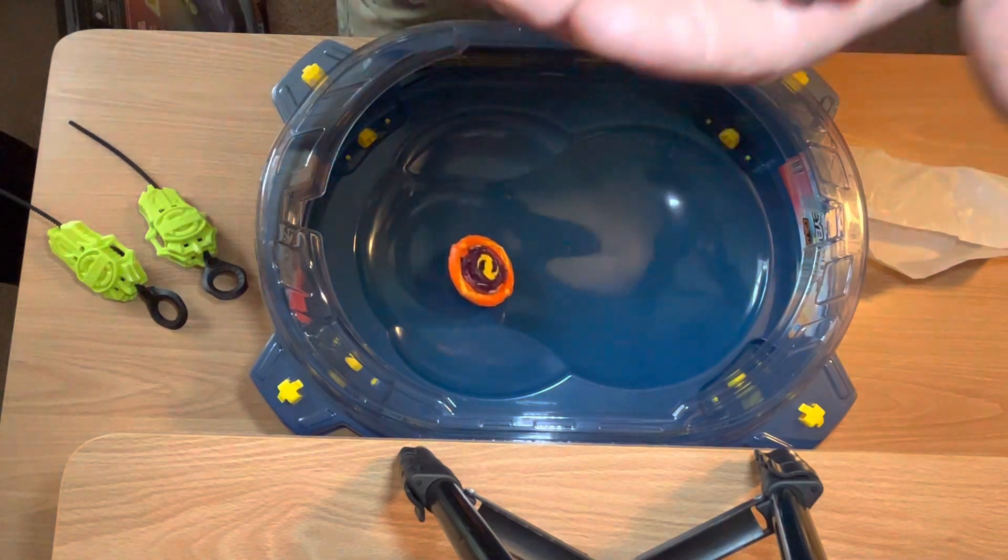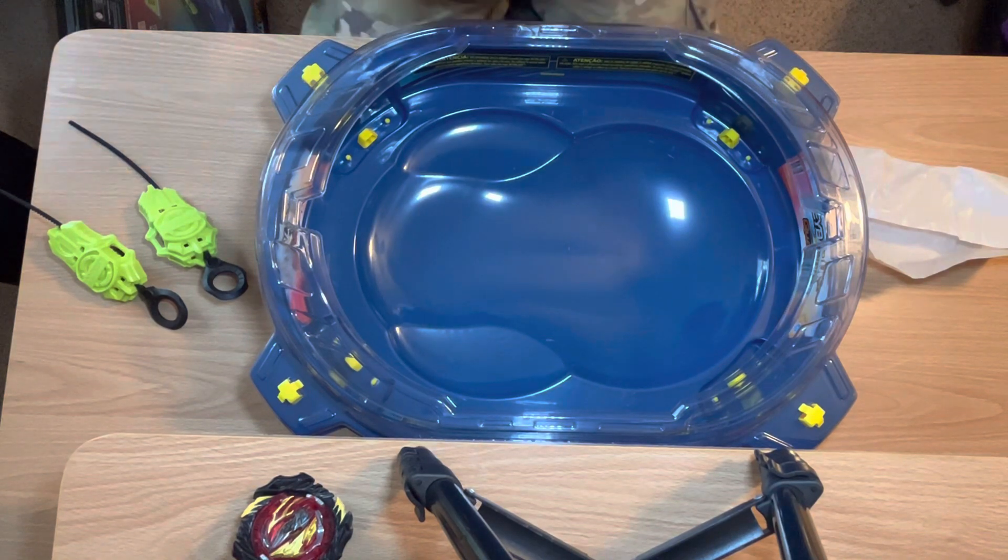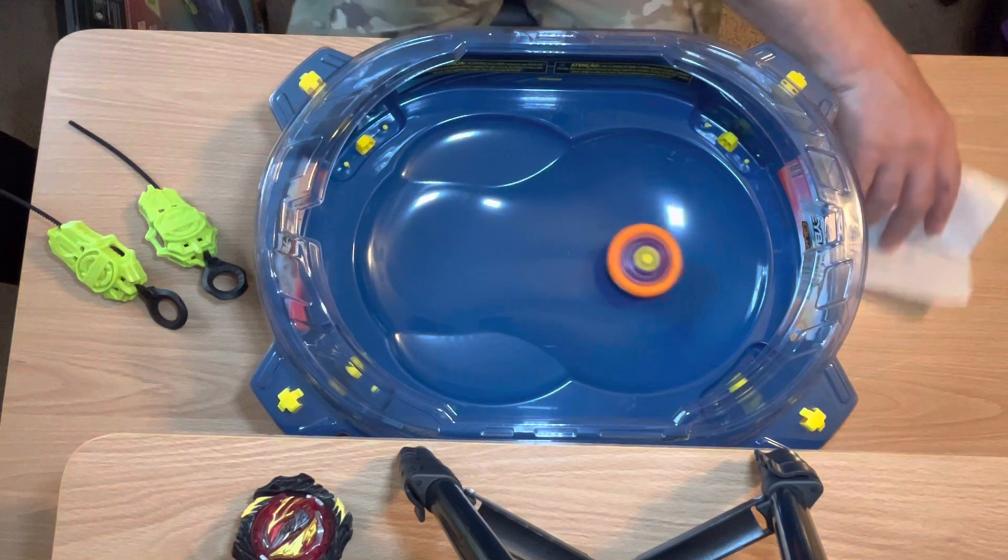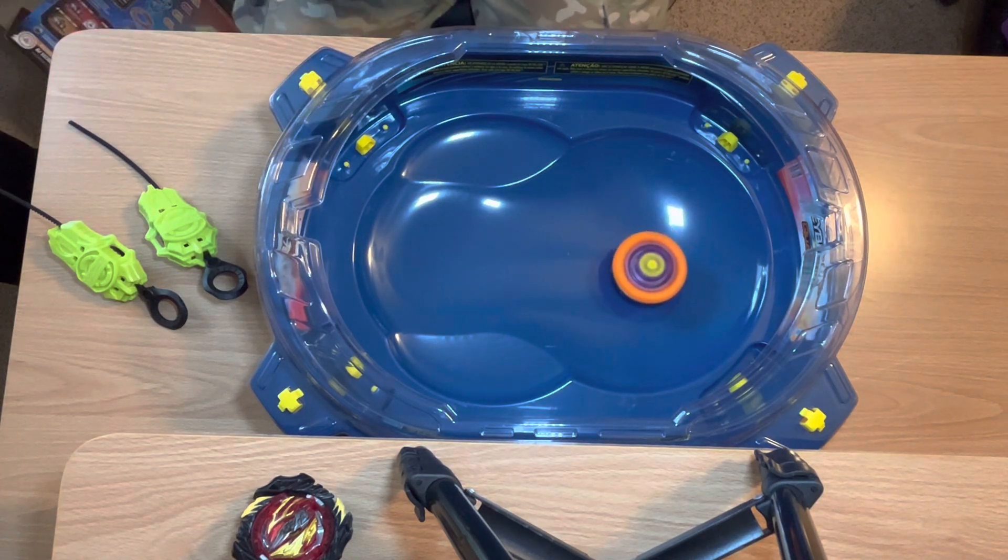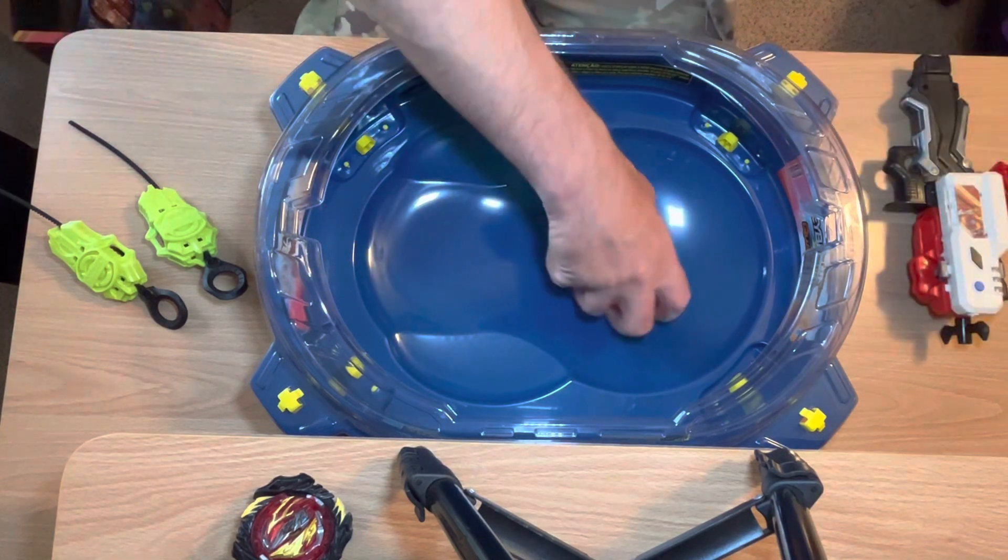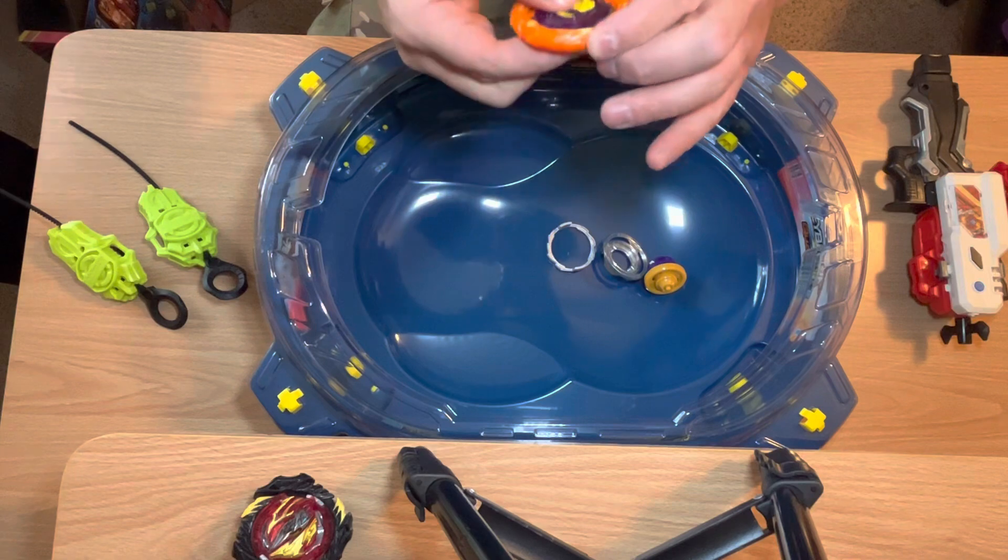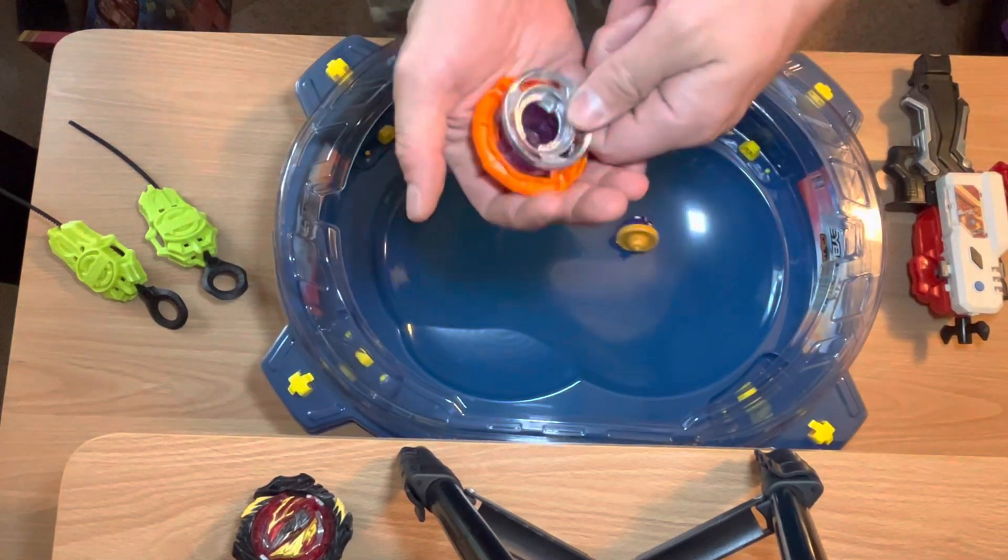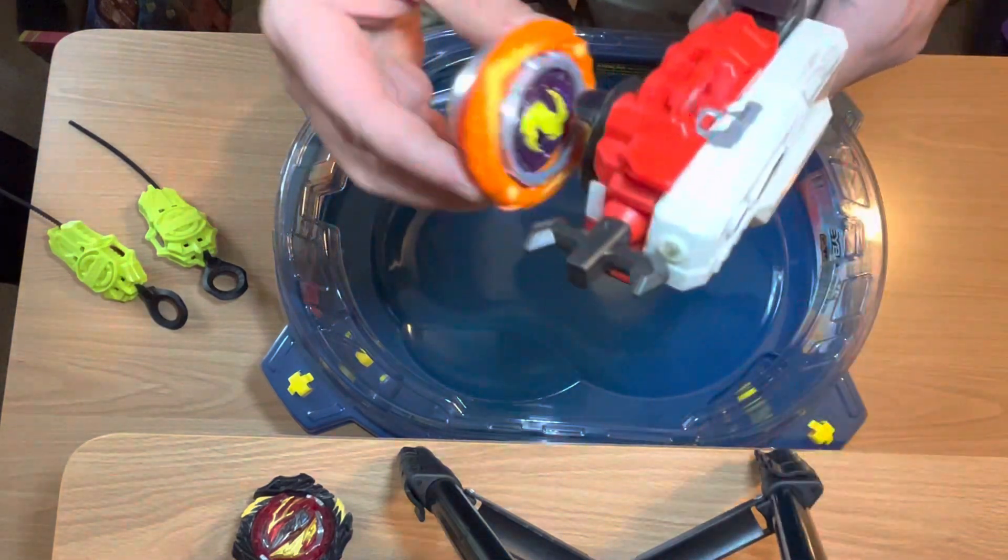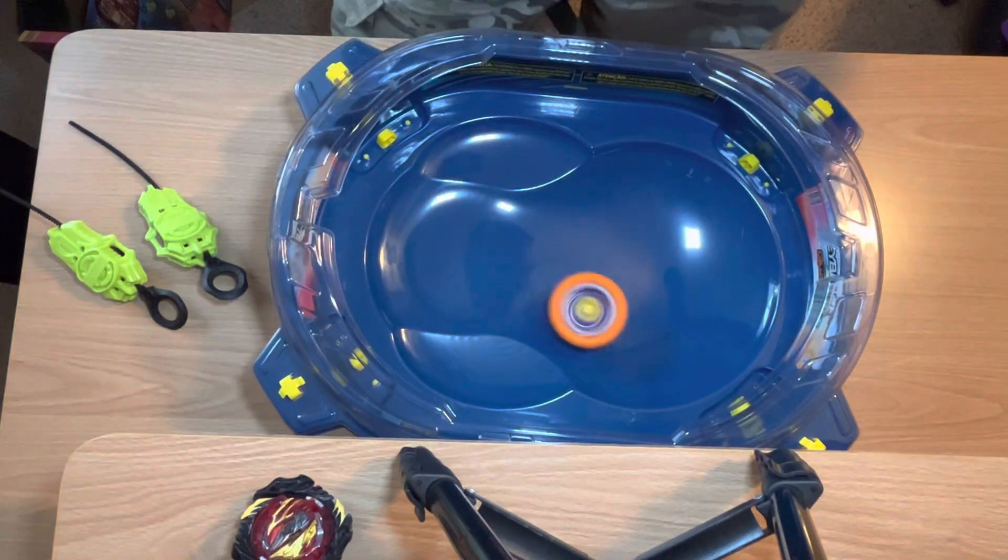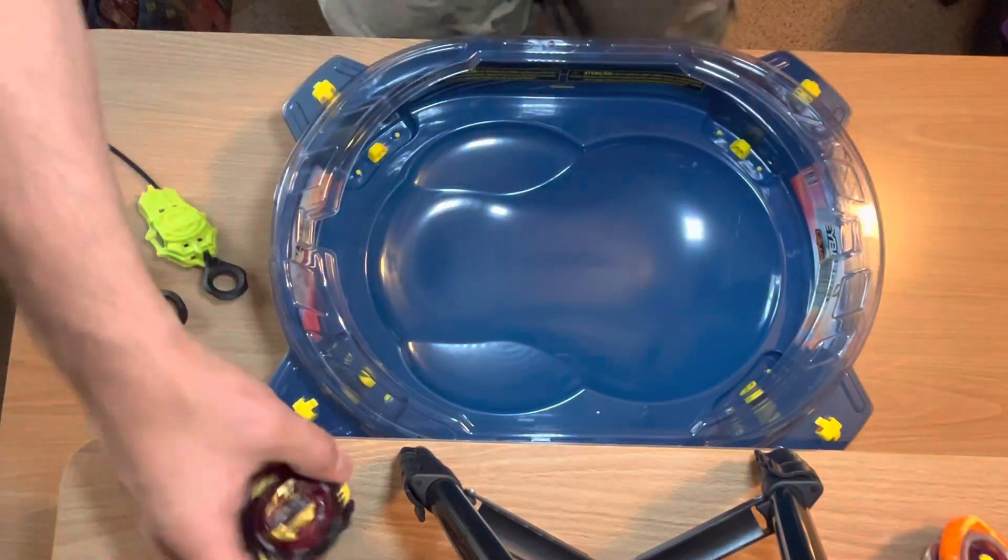We unboxed Pandora first, so Pandora will actually test spin first. All right, we're just going to use ripcord. Three, two, one. And Pandora, I believe is it. Yeah, so Pandora is a stamina type. Okay. And that's basically how Pandora works in core plus. Now we're going to go on to apex plus.